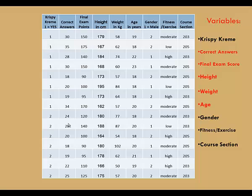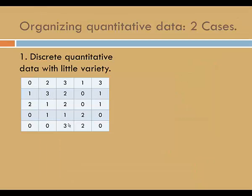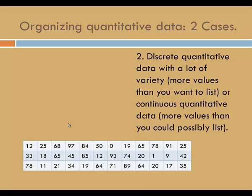So let's look at some strategies for organizing quantitative data. We need to consider two cases. In the first case, we have discrete quantitative data with very little variety, like we see on the table now. The numbers here are 0, 1, 2, and 3, so it's a short list of whole numbers.